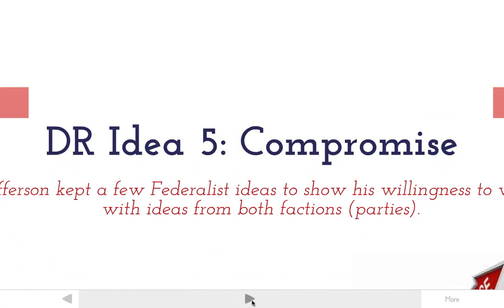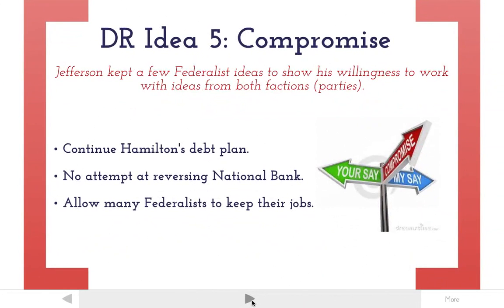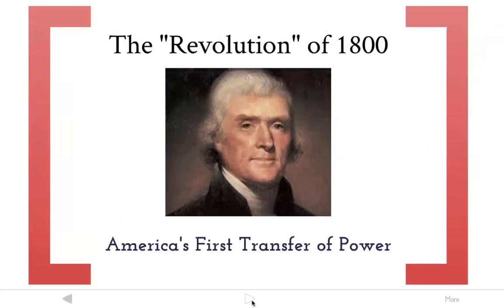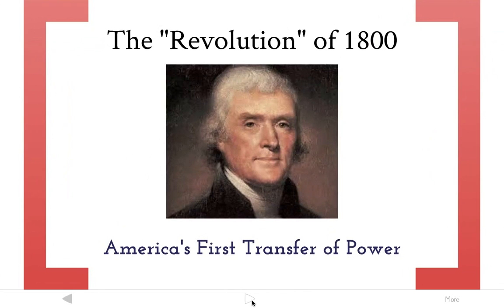The last Democratic-Republican idea that Jefferson really changed was the idea of compromise. Jefferson kept some Federalists in the government just to show he was willing to work with both sides, which was a little different from what the Federalists did. He continued Hamilton's debt ideas and his debt plan, continuing to pay down state debt with national money. There was no attempt at reversing the national bank that Hamilton passed, and he even allowed many Federalists in the government to keep their jobs.